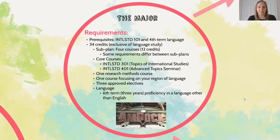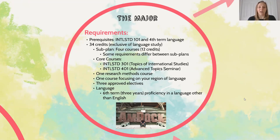For all students across all four sub plans, there are a basic set of major requirements. The pre-reqs include our introductory course, International Studies 101, and fourth-term language proficiency in a language other than English. You could be enrolled in fourth term, have tested out, or reached proficiency through AP results, IB credit, or other testing. Once those two things are met, a student is eligible to declare.